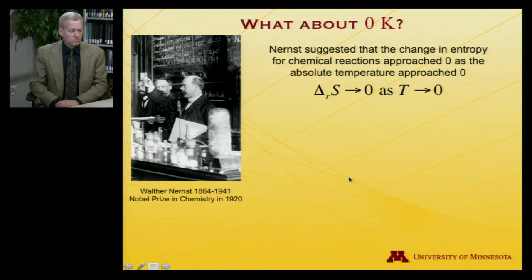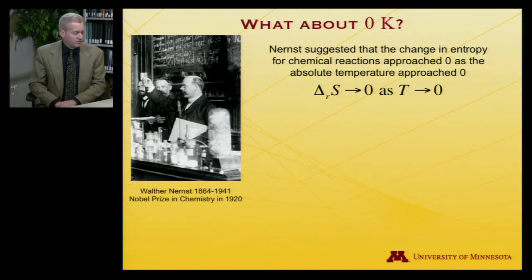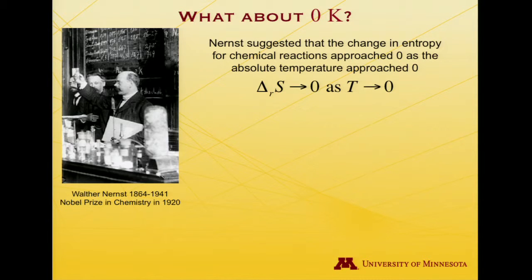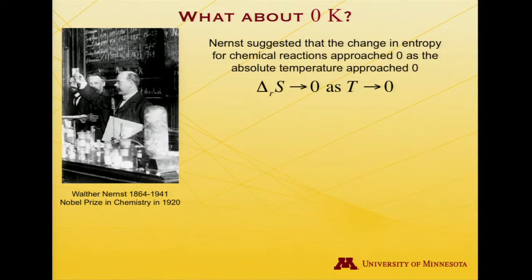What about 0 Kelvin? Here we have a picture of Walter Nernst, who was awarded the Nobel Prize in Chemistry in 1920 in part for his work on thermodynamics. Nernst made the suggestion based on a number of experimental studies that the change in entropy for chemical reactions approached 0 as the absolute temperature approached 0 — that is, the change in entropy of reactants going to products as temperature goes to absolute zero.